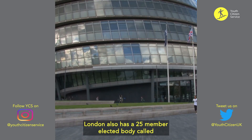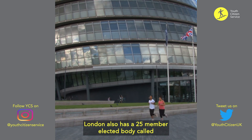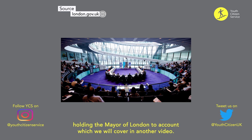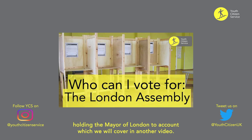London also has a 25-member elected body called the London Assembly, which holds the responsibility of holding the mayor of London to account, which we will cover in another video.